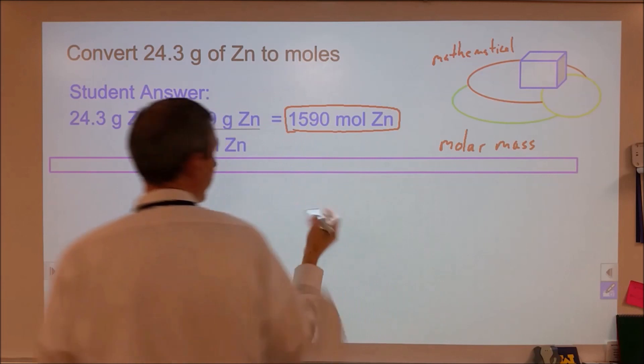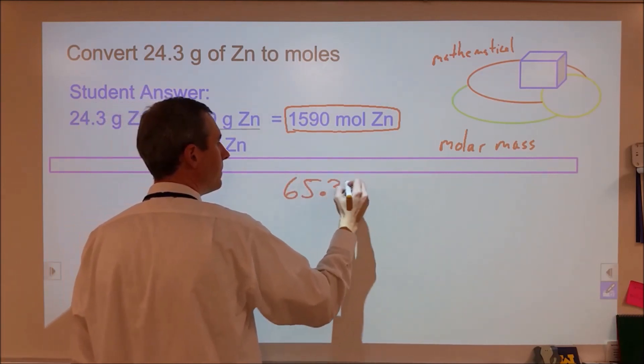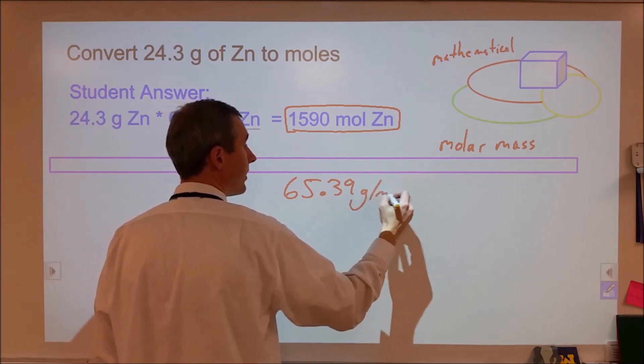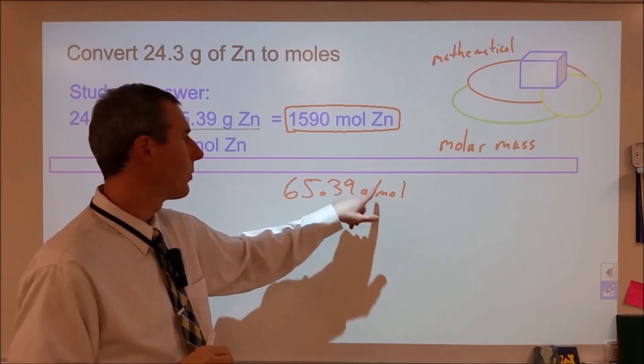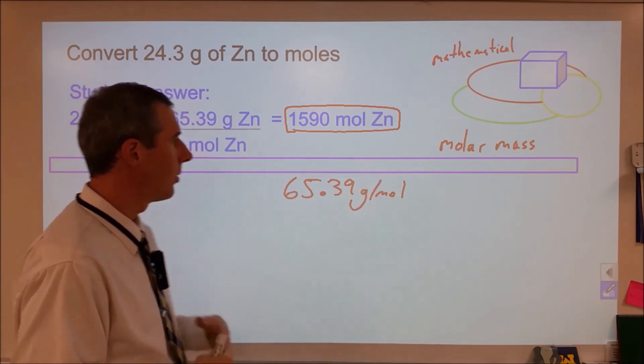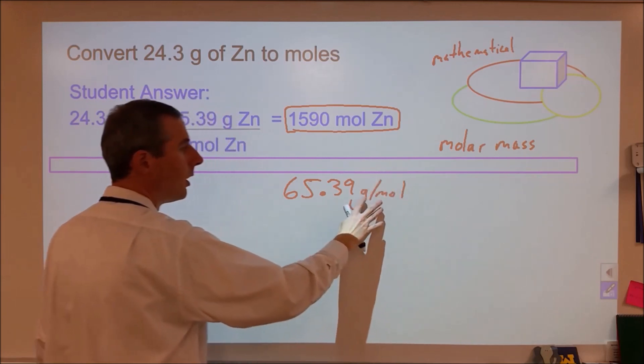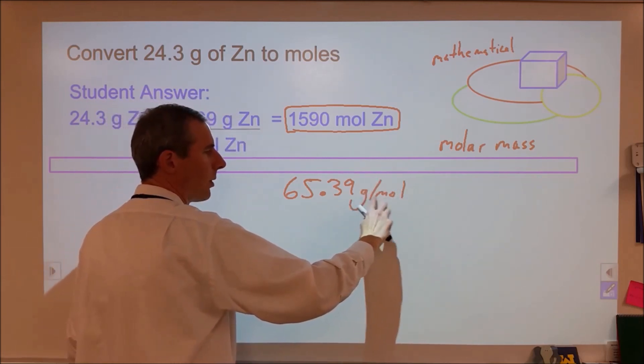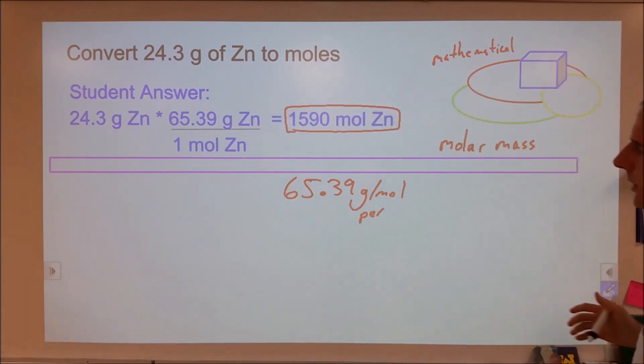So the molar mass of zinc we can get off the periodic table at 65.39 grams per mole, which is usually written like this. And because it's written like this, most chemistry students will ignore the units on it because they don't really know what to do with the division or they just don't care about units.